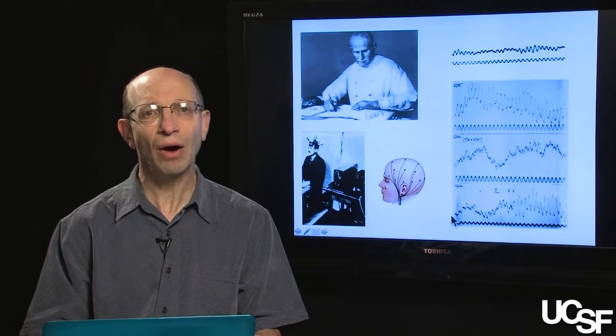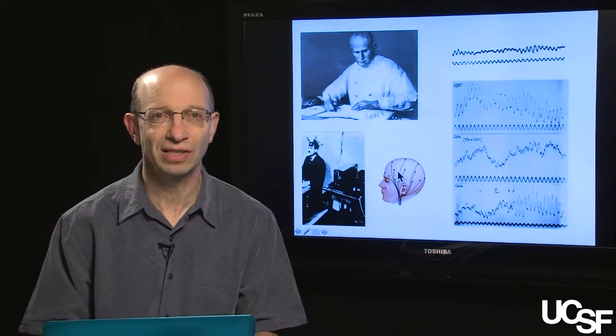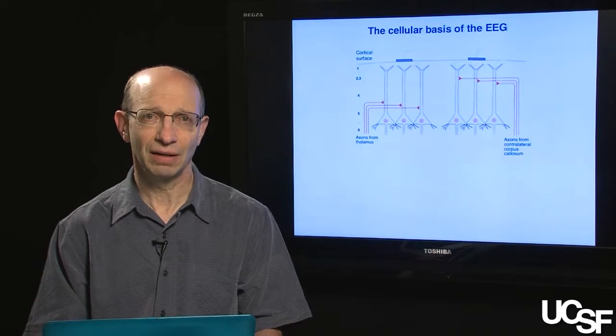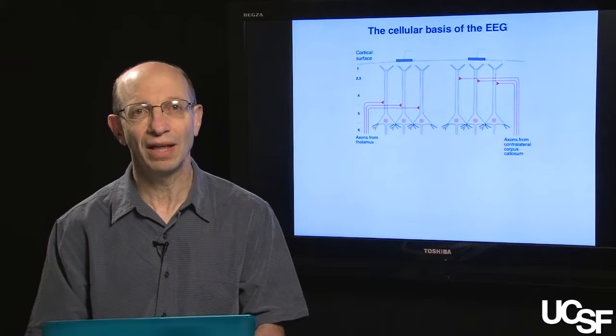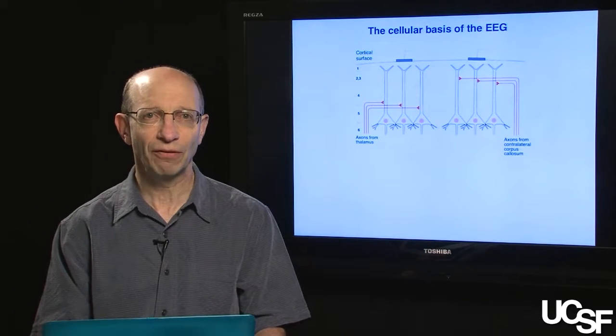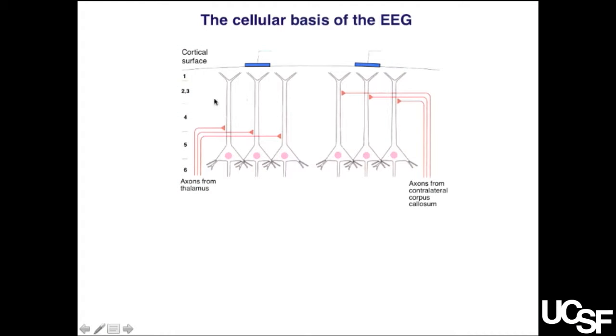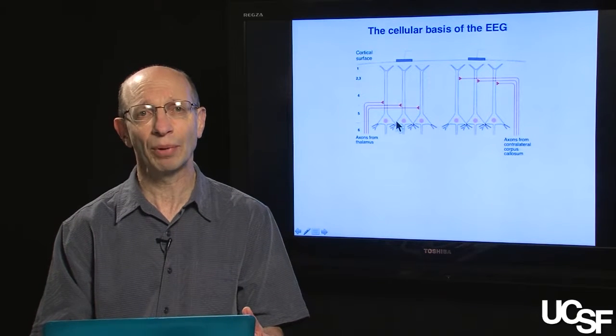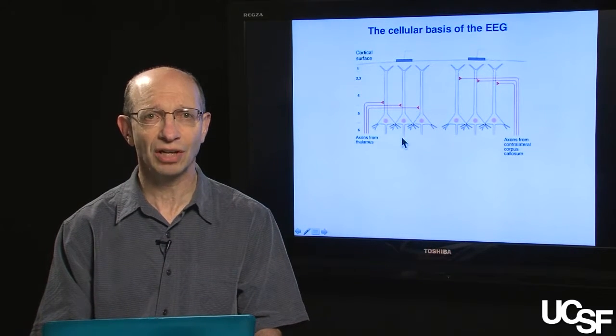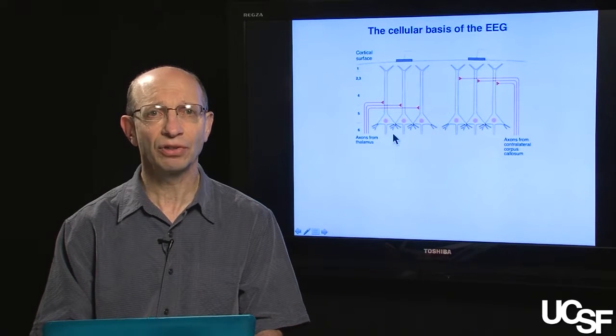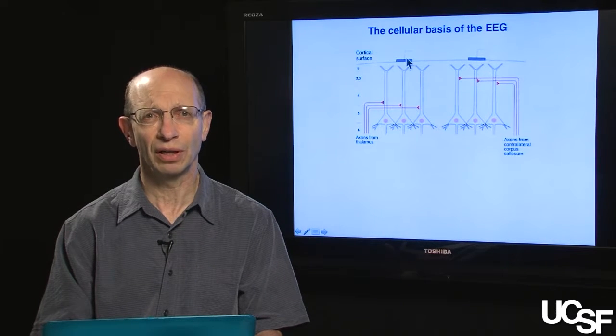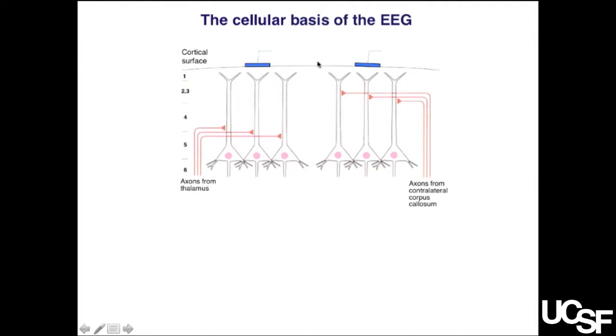So the question is, how is it that electrodes that are placed on the surface of the scalp are able to actually pick up the electrical activity of the underlying cortex? Now in this slide, I'm going to walk you through the way the EEG works. So let's start by first looking at the fact that here I've drawn in six neurons. There are actually two ensembles of neurons.